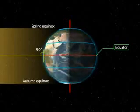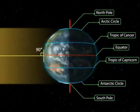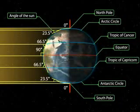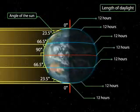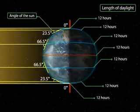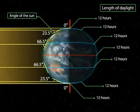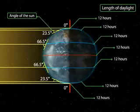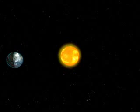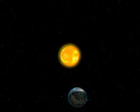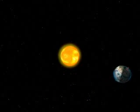Spring equinox. The angle of the Sun decreases towards the poles. On this day, the two hemispheres receive a similar amount of solar radiation, and the length of day and night is the same at all places on the Earth. After this day, it is spring in the Northern Hemisphere, where the day is longer than the night. In the Southern Hemisphere, it becomes autumn, when the day is shorter than the night.